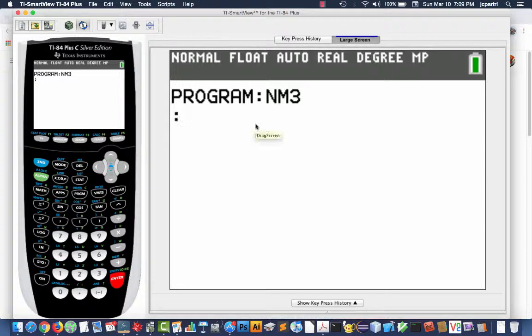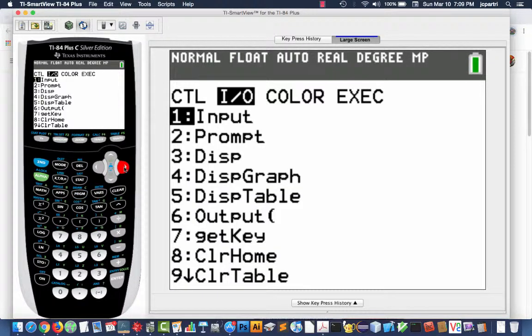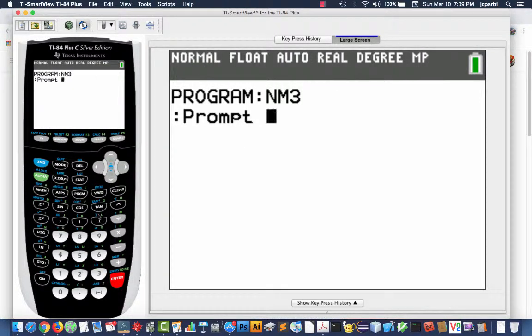How do I get the computer or the program to prompt me for input? Well, here's what I do. I hit the program key again. Don't worry, you're still, you haven't left your program. You're now in editing mode. It's an input-output function that I desire, so I scroll over to I.O., and these are the different ways you can get input-output. I scroll down to prompt. I hit enter. Now, I want to input two values.